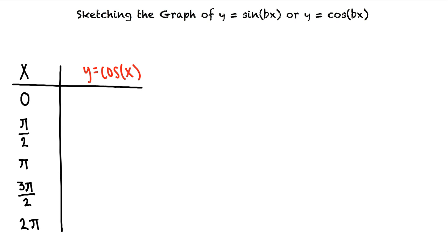The x coordinates of the key points occur every pi halves units starting at x equals 0 and ending at x equals 2 pi, and these inputs give outputs of y equals negative 1, y equals 0, or y equals 1.